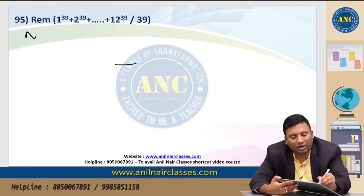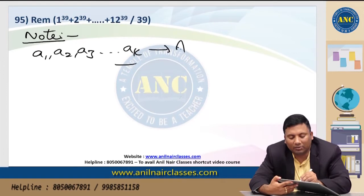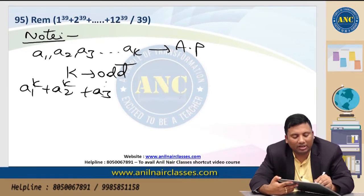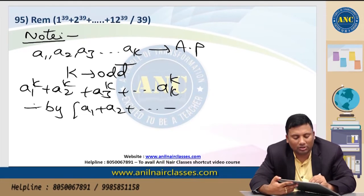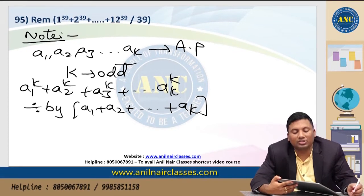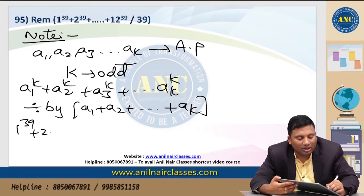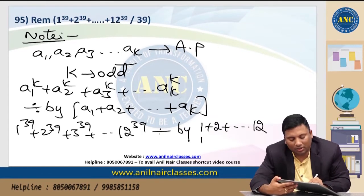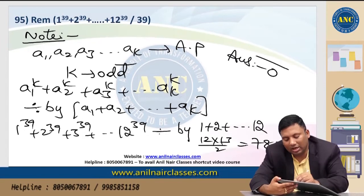Important note: If a1, a2, a3, ..., ak are in arithmetic progression and k is an odd number, then a1^k + a2^k + a3^k + ... + ak^k is always divisible by (a1 + a2 + ... + ak). So 1^39 + 2^39 + 3^39 + ... + 12^39 divided by 78: since 1 to 12 is an AP and 39 is odd, it is divisible by the sum of bases = 1 + 2 + ... + 12 = 78. Answer is 0.